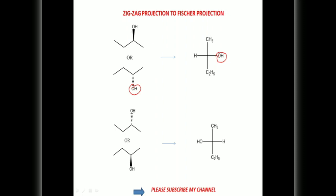Now suppose we check the configuration here. This is the first priority OH, this is the methyl, and this is the ethyl. Methyl-ethyl: ethyl has second priority and methyl third priority. Take the arrow from 1 to 2, 2 to 3 — that is anticlockwise, so S configuration. But now check the configuration: the first priority OH, ethyl second priority, and this one third priority. Take the arrow — this arrow is in clockwise direction — but you have to take the reverse, so it is S configuration.